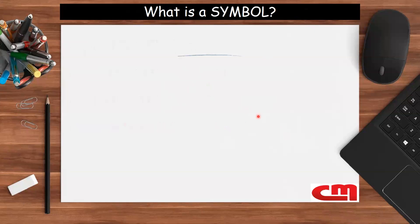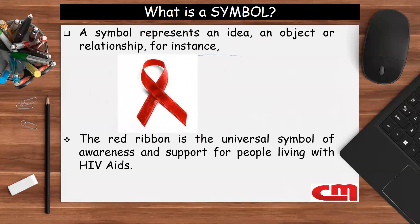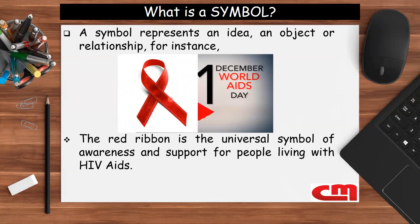What is a symbol? A symbol represents an idea, an object, or a relationship. For instance, the red ribbon is the universal symbol of awareness and support for people living with HIV/AIDS, celebrated every first of December worldwide. So each time you see this symbol, you know it represents awareness and support for people living with HIV/AIDS — that is the idea.